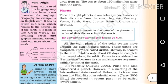Geography has its origin in Greek, which relates to the description of the earth. It is made of two Greek words: geo meaning earth and graphia meaning writing.